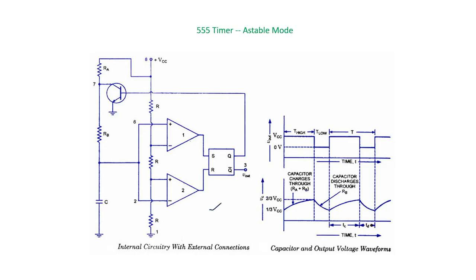In the last lectures we discussed about the monostable multivibrator and its applications using the 555 timer. The second mode of the 555 timer is astable mode. This is the circuit diagram of the 555 timer in astable mode. You can see some differences between astable mode and monostable mode. One difference is in monostable mode we have only one resistor, whereas here we have two resistors RA and RB.